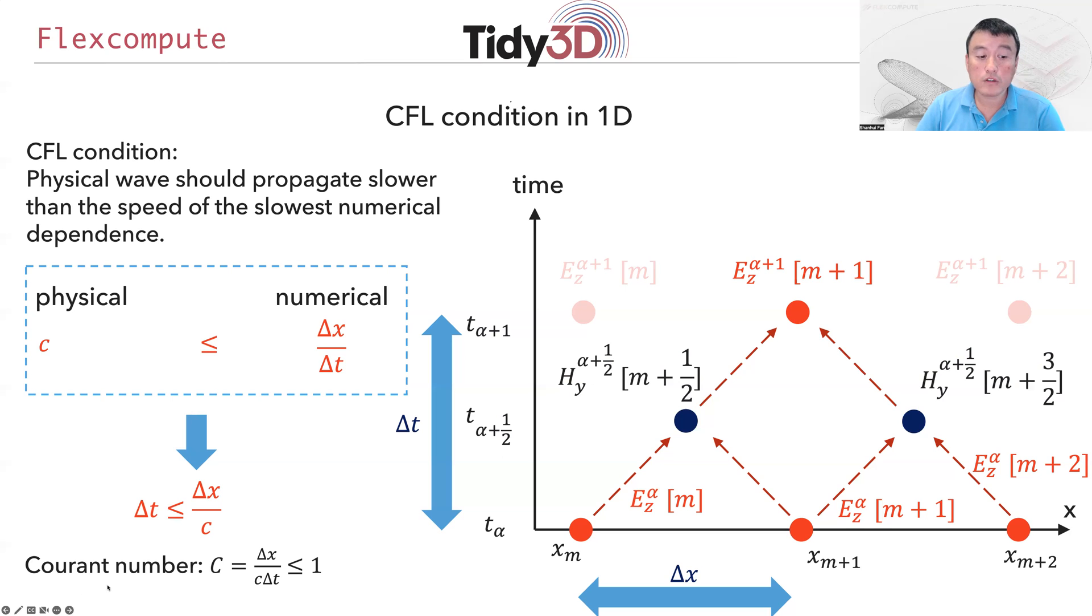Typically we define the Courant number, which is Δx divided by c times Δt. In one dimension, this has to be less than one.